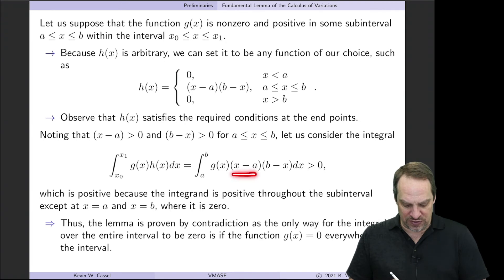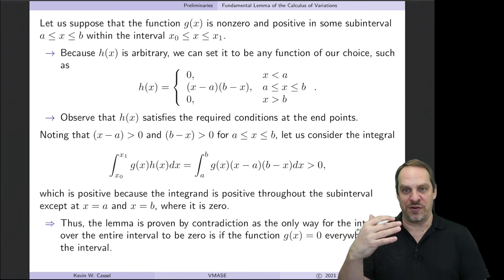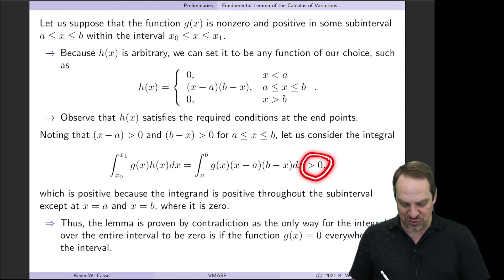That will be greater than 0. We said g is positive, this is positive, and this is positive. So the function over the interval is positive everywhere. So you take the integral, the area under the curve will always be positive.